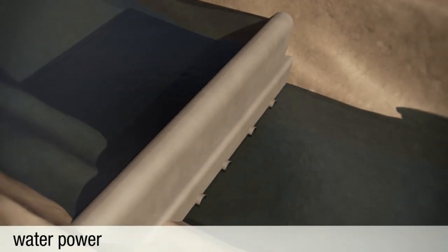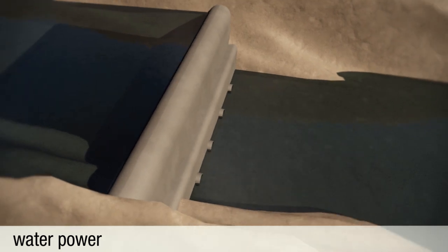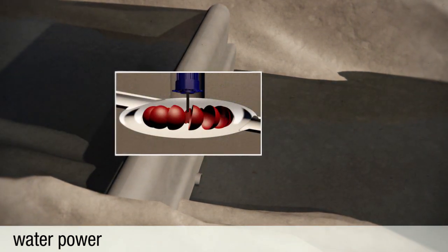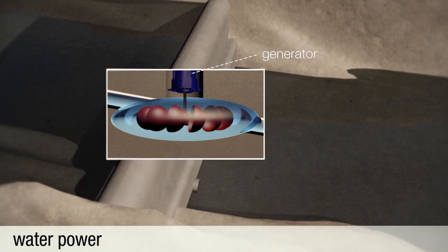Similar to wind power, in hydroelectric power stations, kinetic energy drives a generator, which produces electricity. Wave and tidal power plants use the natural movement of the sea.